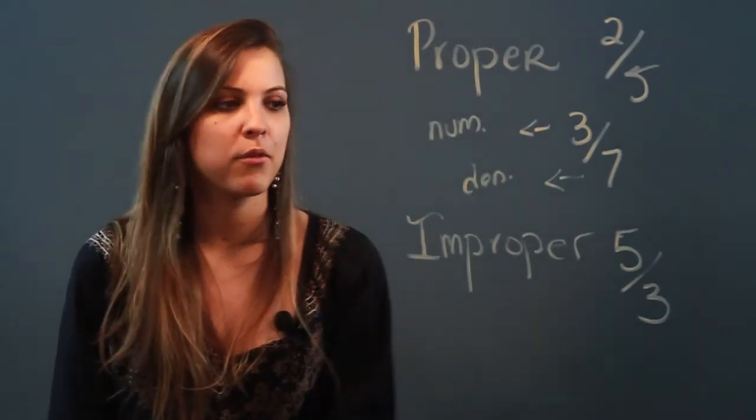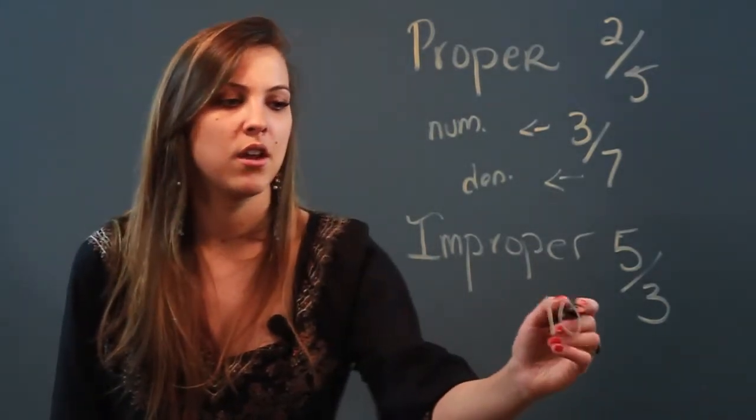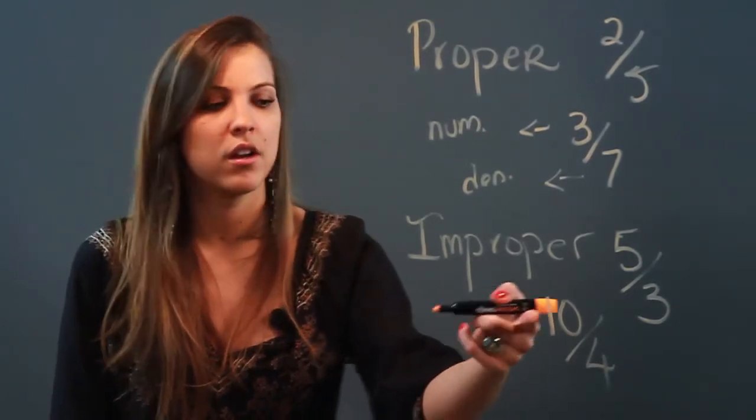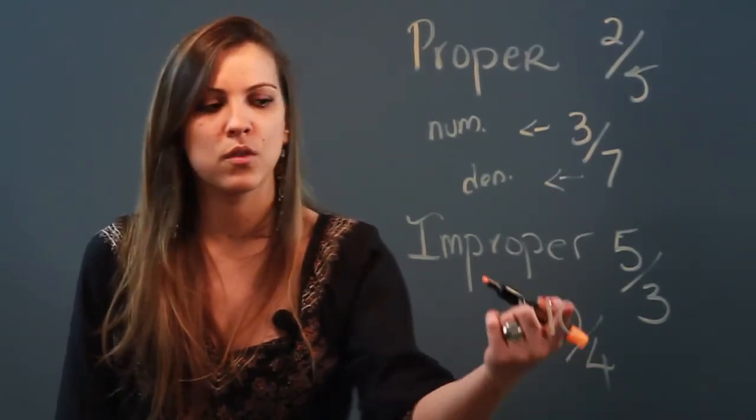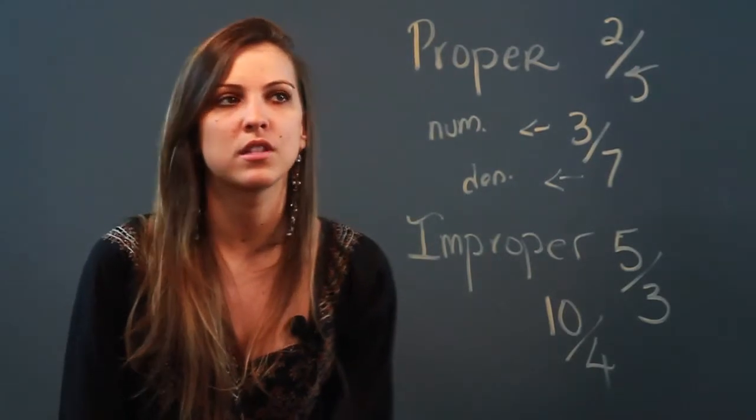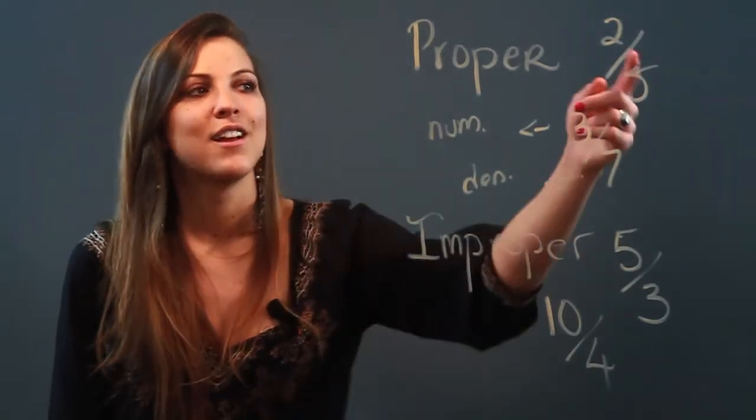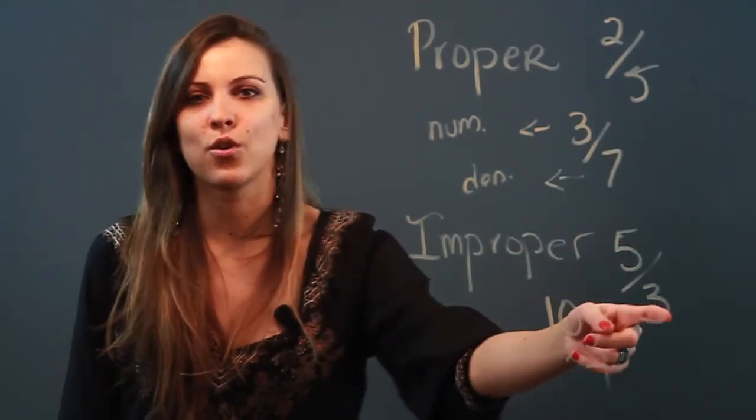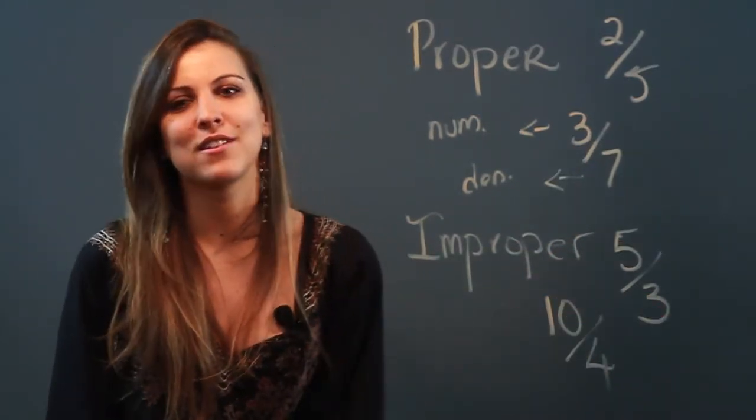One more example of an improper fraction would be ten over four. My numerator ten is larger than my denominator four, so that makes it an improper fraction. So proper fractions: numerator is less than the denominator. Improper fractions: numerator is greater than the denominator. And that's the difference.